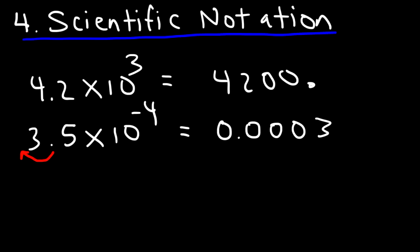So the decimal point was here, but we move it one, two, three, four spaces to the left. And so if you keep that in mind, if you see a negative exponent, it's associated with a very small number between zero and one. Or if you see a positive exponent, it's associated with a large number. And so that can help you to convert from scientific notation into decimal notation and vice versa.